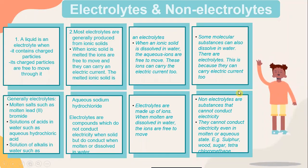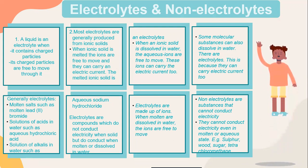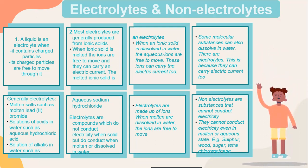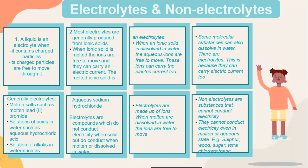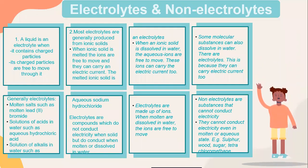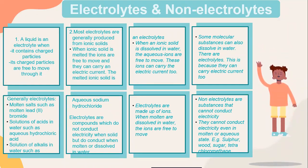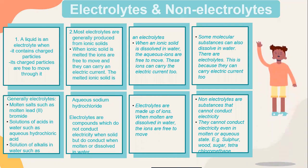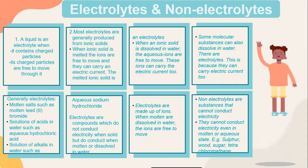Electrolytes and non-electrolytes: a liquid is an electrolyte when it contains charged particles and its charged particles are free to move through it. Most electrolytes are generally produced from ionic solids. When an ionic solid is melted, the ions are free to move and can carry an electric current. The melted ionic solid is an electrolyte.